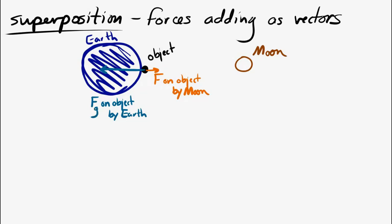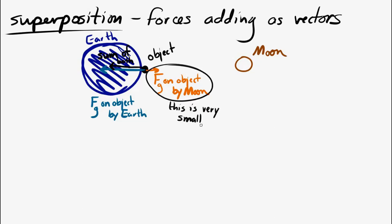If you add those two forces together as vectors, the net force is going to be toward the Earth. There's a gravitational force on everybody who walks around the Earth that's caused by the Moon, but that force is pretty small compared to the gravitational force of the Earth. It's big enough to cause things like tides, but we don't notice it in our everyday walking around.